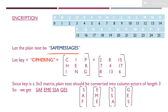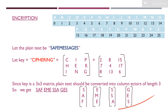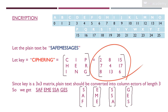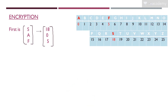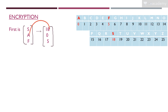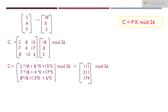We split the plain text into trigraphs — groups of three letters. 'Safe messages' becomes: SAF, EME, SSA, GES — four column vectors. The first trigraph is SAF. We translate it to integers: S=18, A=0, F=5, giving the column vector [18, 0, 5].